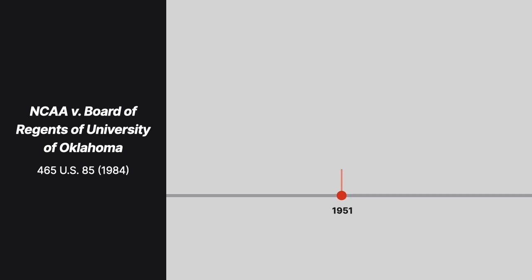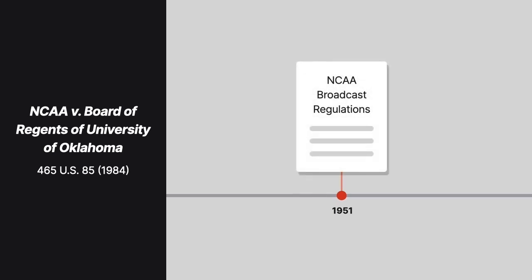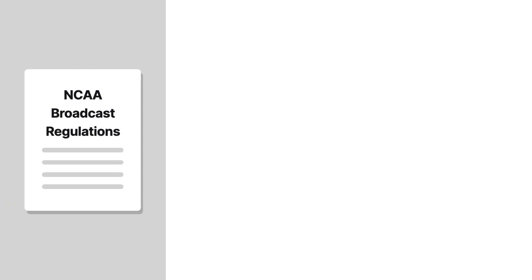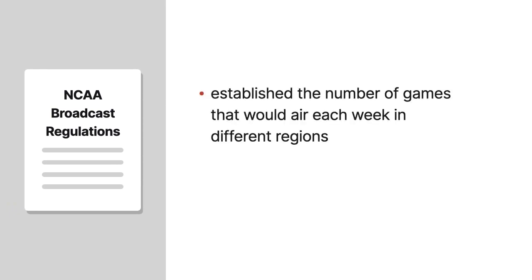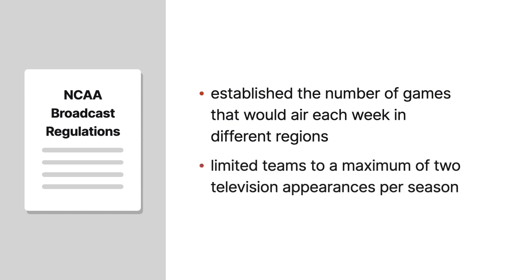In 1951, the NCAA began regulating how college football games were broadcast on television. The NCAA's original broadcast plans were very limiting and established the number of games that would air each week in different regions. The broadcast regulations also limited teams to a maximum of two television appearances per season.